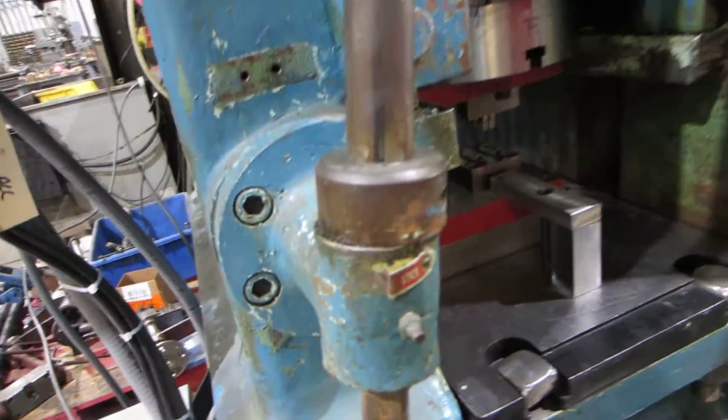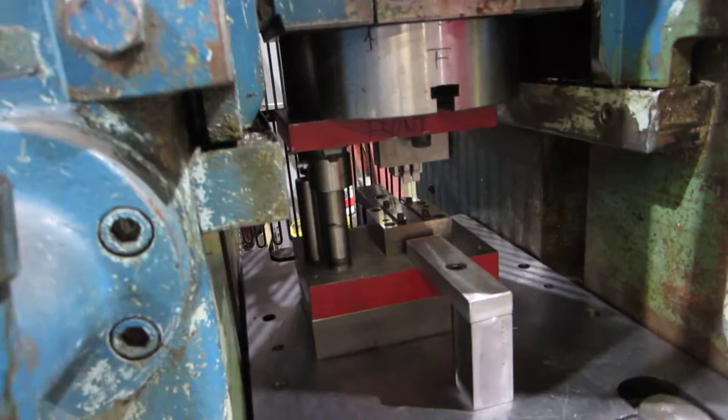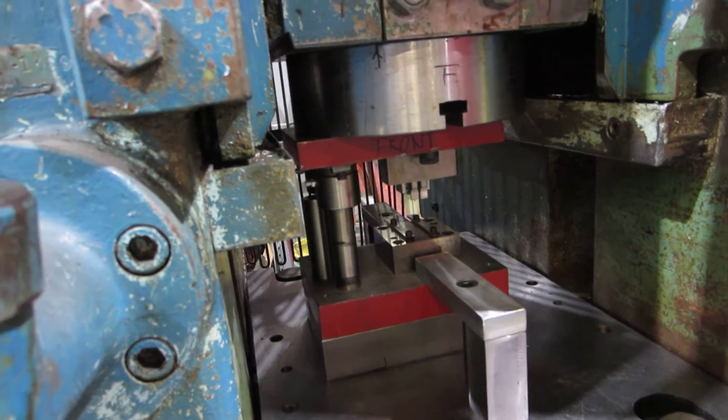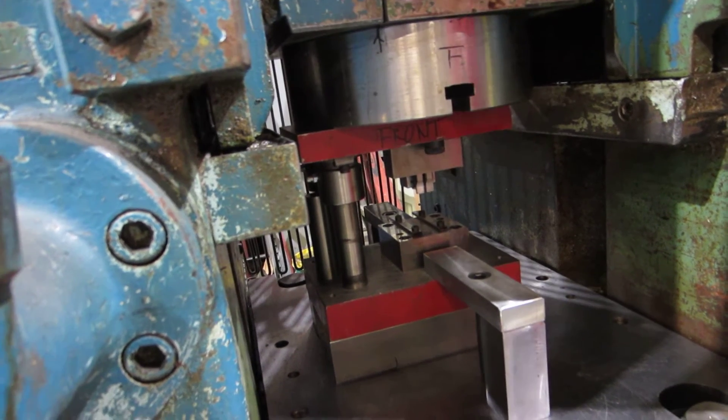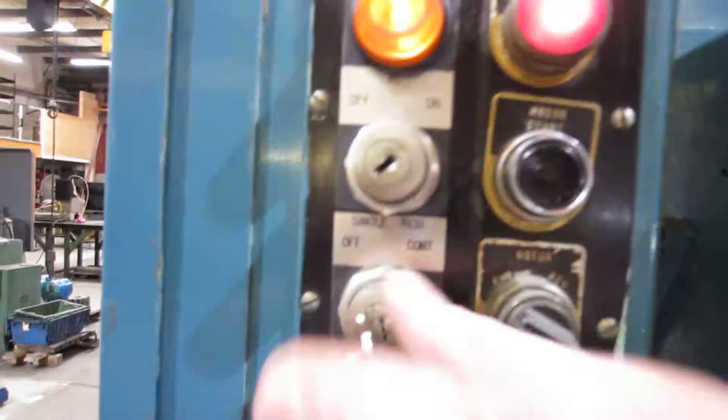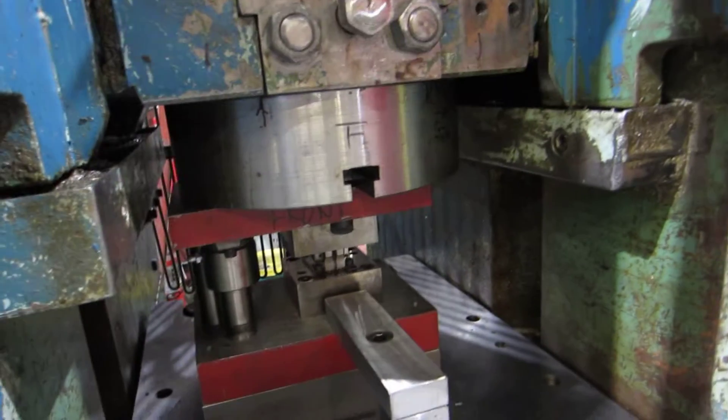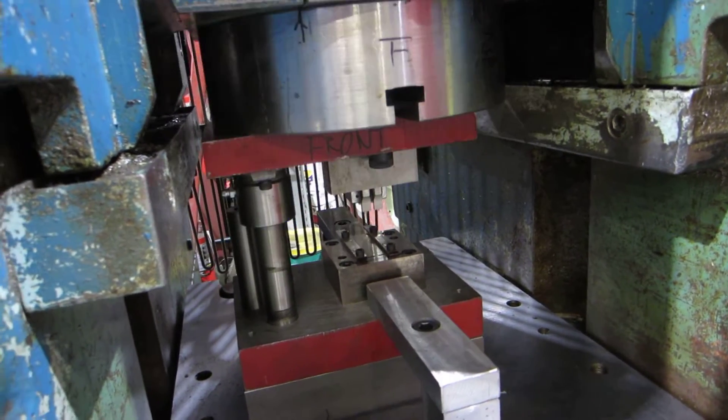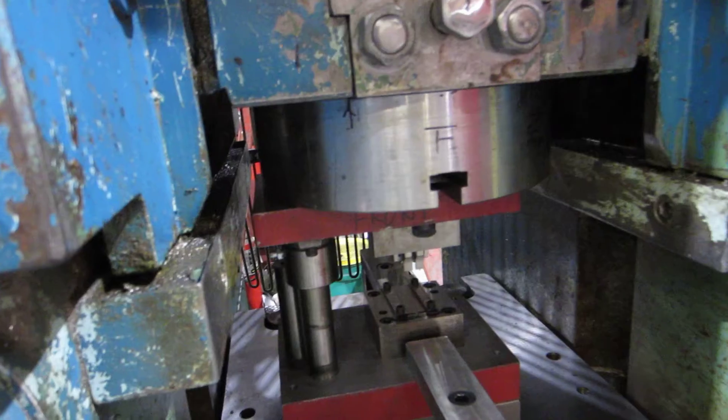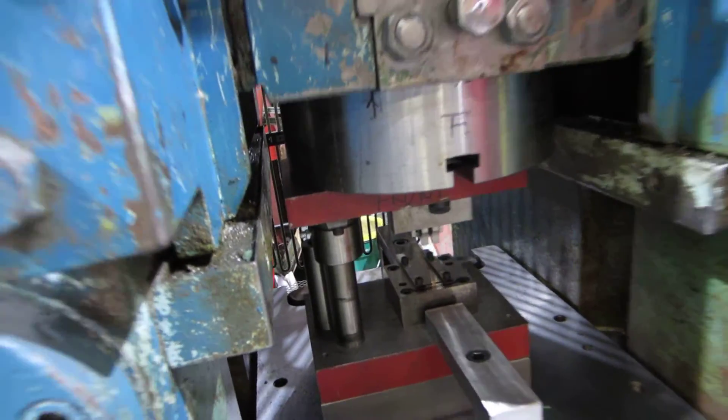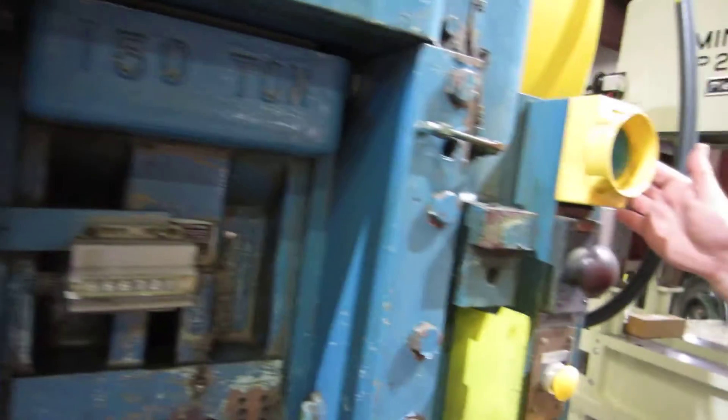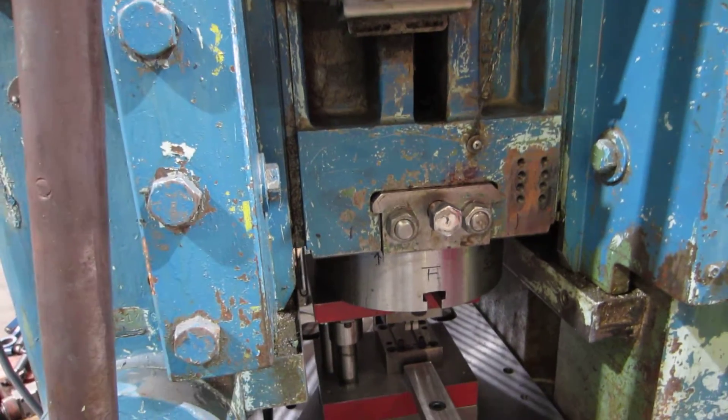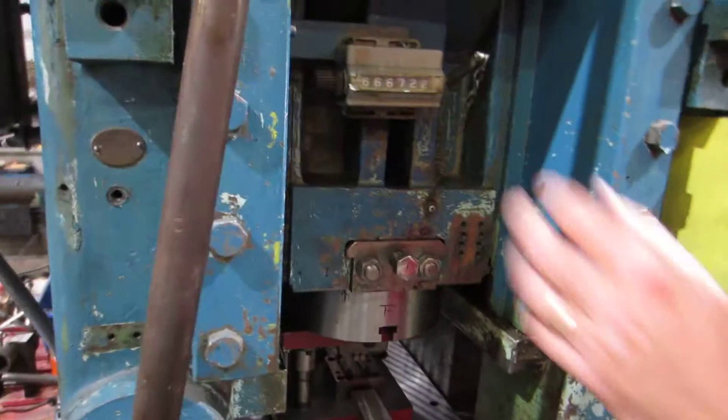Okay, I'm going to cycle the press for you. So right now, we're in the inch mode for setup. When you're ready to run, you go to single stroke. Hit the reset button. And then if you want to go continuous, continuous, reset, preset, back to the top.